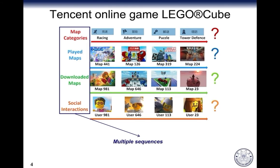From the LEGO Cube example, we can observe that unlike book or movie recommendation where users can only adopt limited actions such as purchase or click, the action types are diverse in online gaming platforms. In LEGO Cube, players are able to select map category, play maps, download maps, and do social interactions. Conventional SRS cannot distinguish such heterogeneous information contained in multiple sequences, so they cannot achieve good performance.